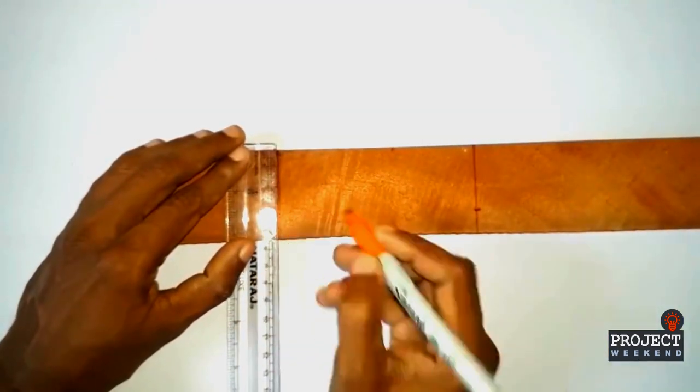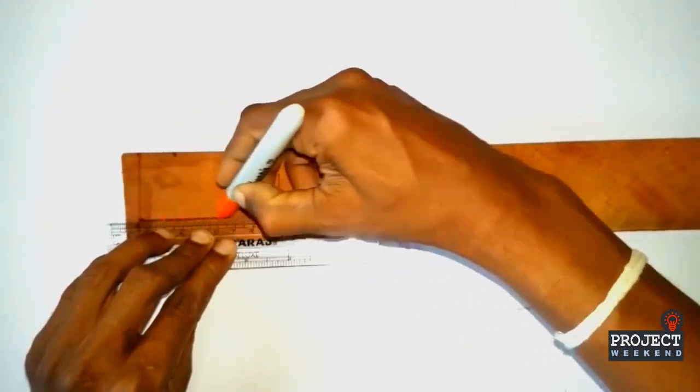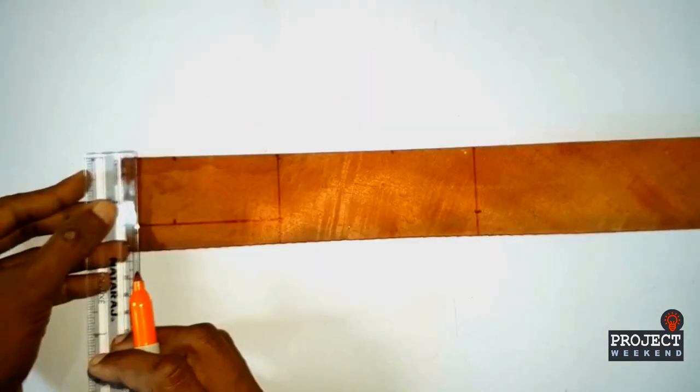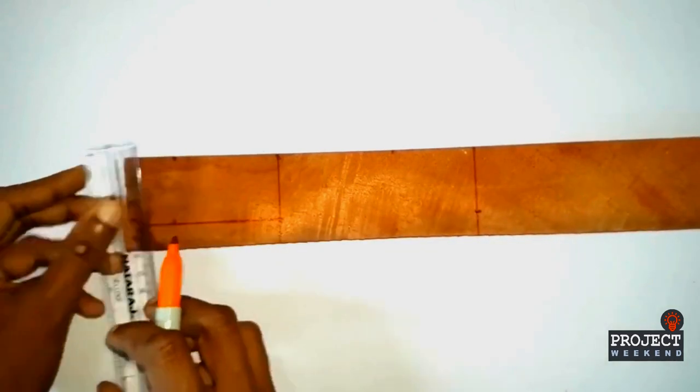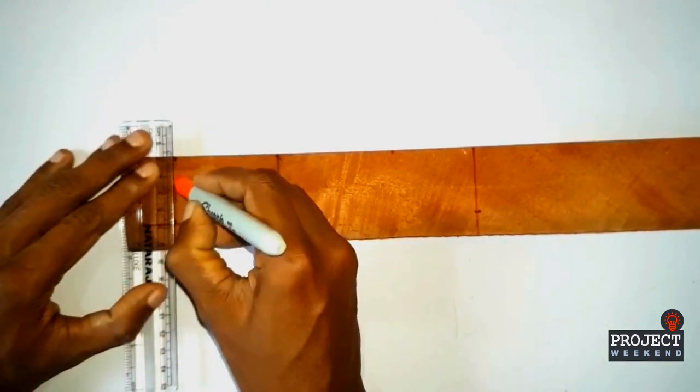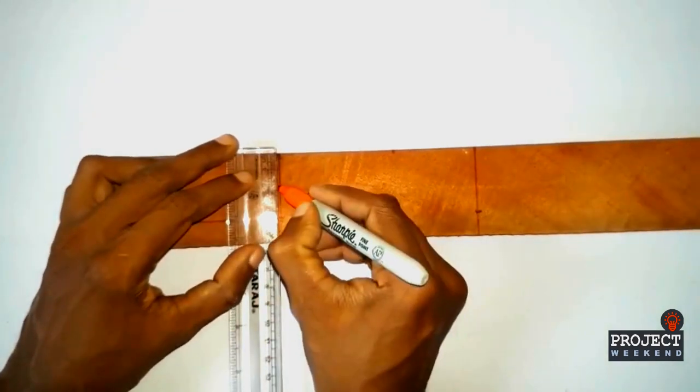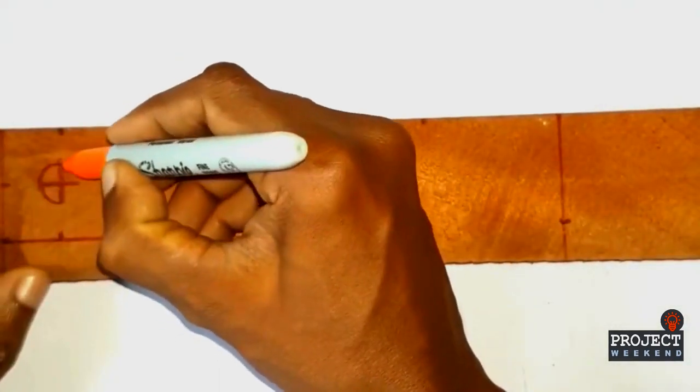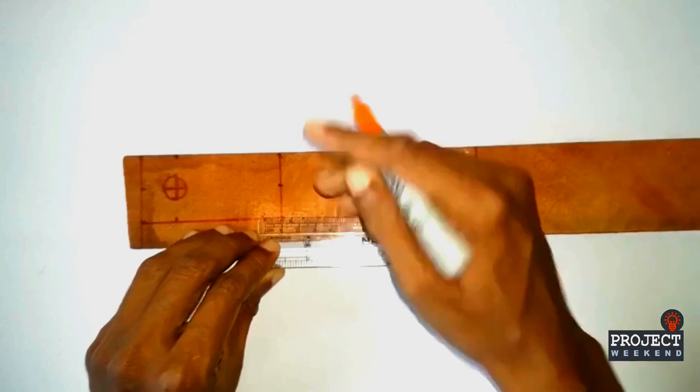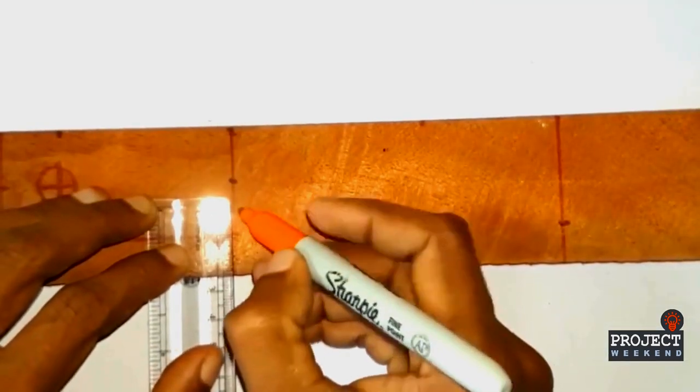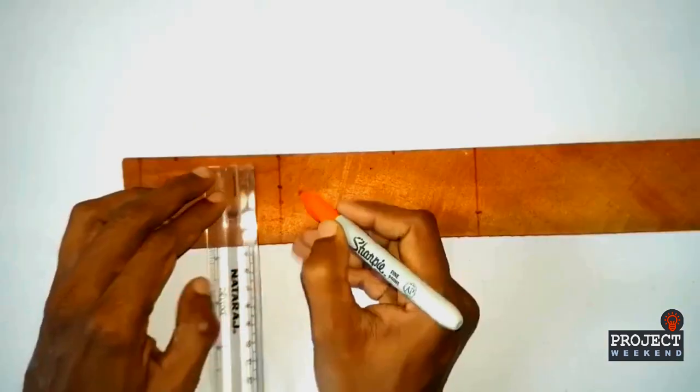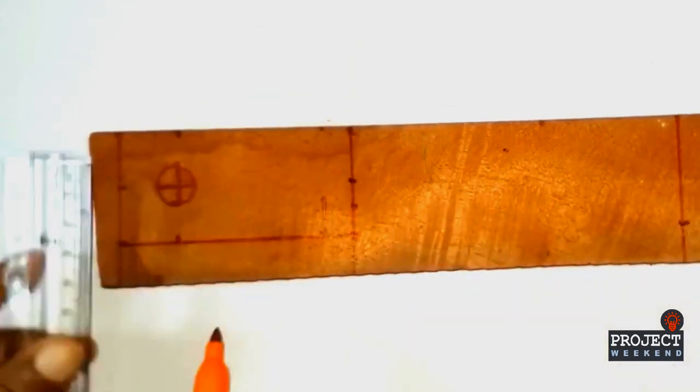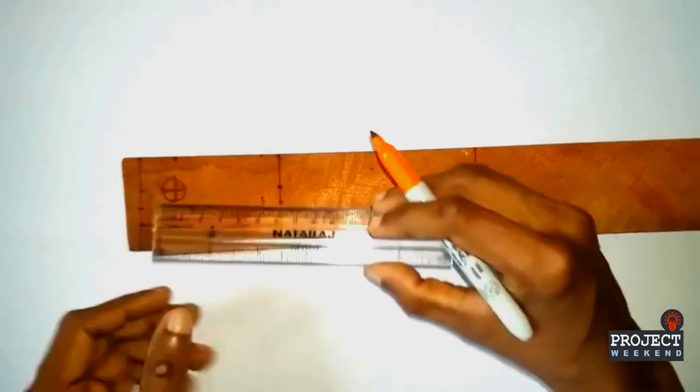4 centimeters. Mark the center point at 2 centimeters. Here we are going to drill for mounting parts. Mark 1 centimeter from right and bottom sides. Mark the center point.